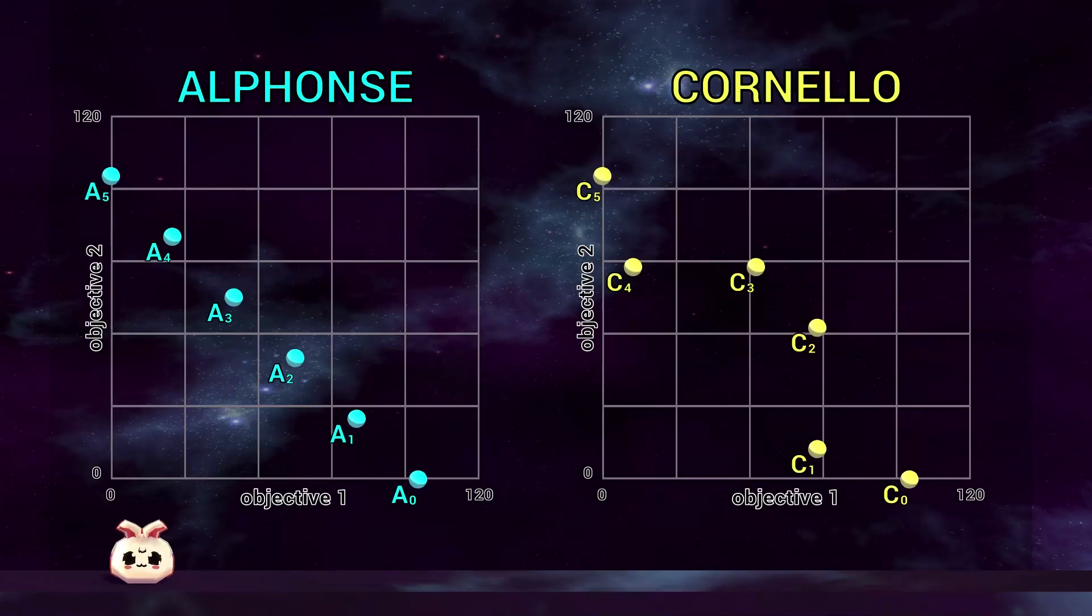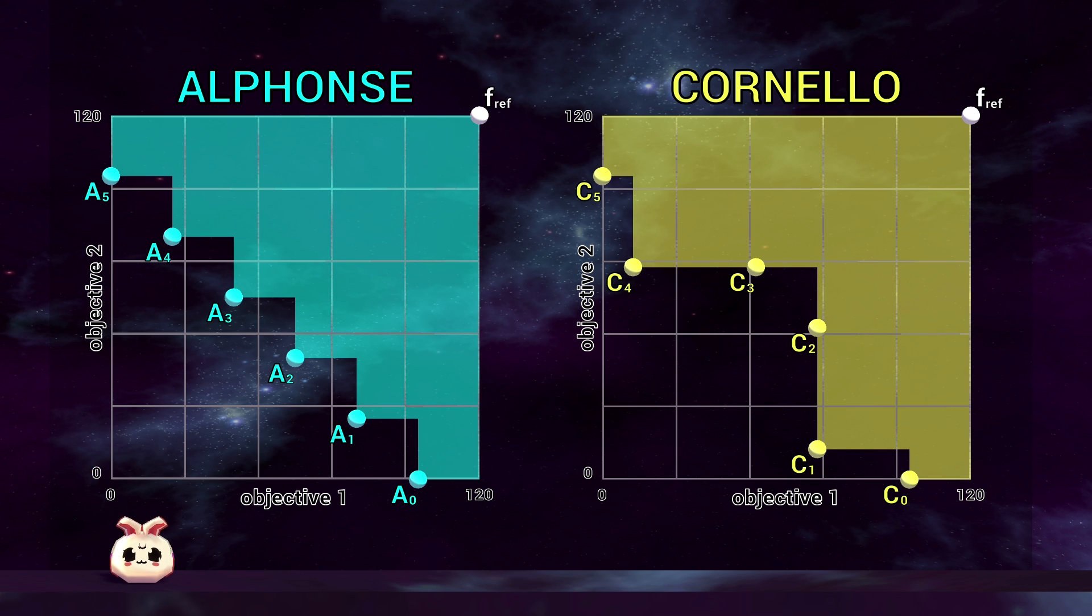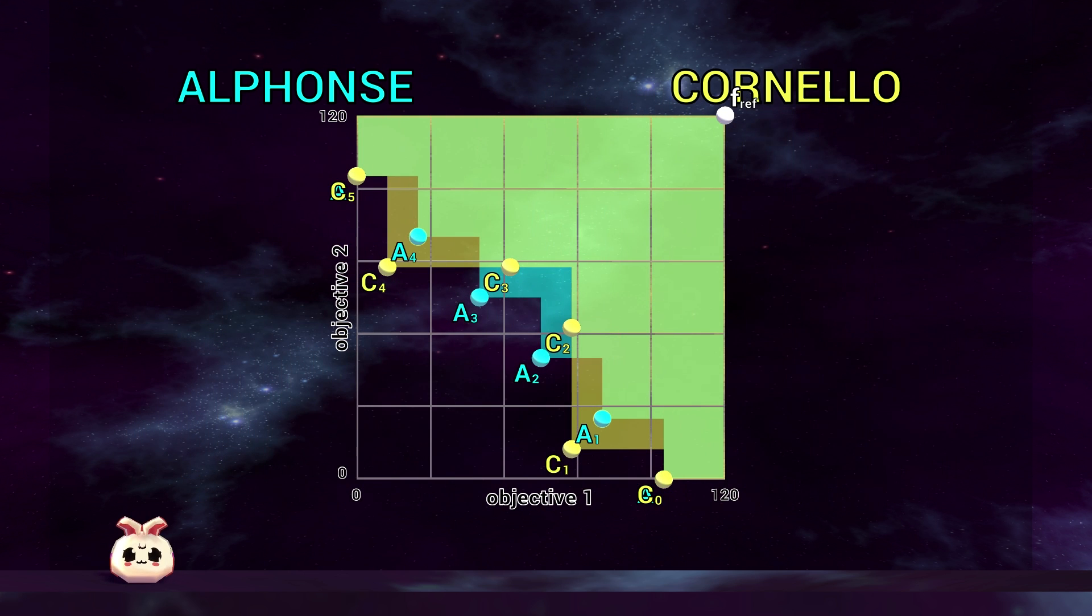Let's revisit the solutions generated by our two algorithms. We will outline what is calculated as the hypervolume indicator, which is actually the 2D area as we mentioned earlier. The shaded area also indicates the objective space which is dominated by the solution sets. This is all according to a mutual reference point indicated with a white marker in the top right. If we overlay the shaded areas which visualize the dominated objective space, we can see that besides the area that is covered by both Alphonse and Cornello, Cornello exclusively covers more area than Alphonse.